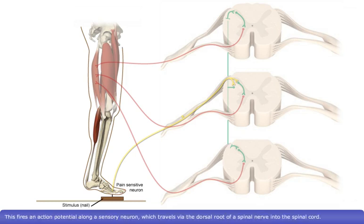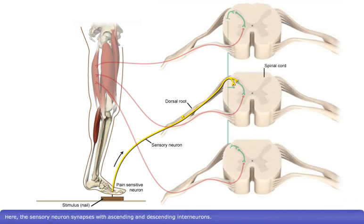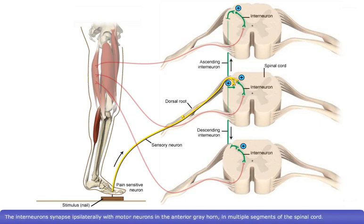This fires an action potential along a sensory neuron, which travels via the dorsal root of a spinal nerve into the spinal cord. Here, the sensory neuron synapses with ascending and descending interneurons.